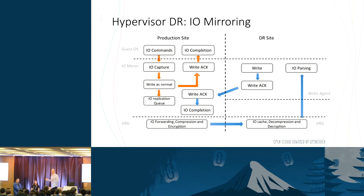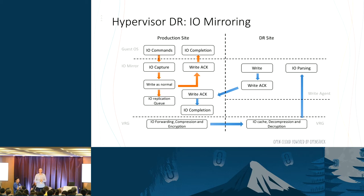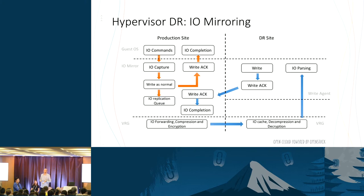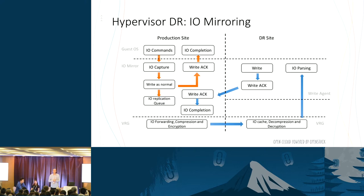Going deep into the implementation: from the VM perspective, it writes to the block device with no changes. We capture the IO — we T it — write it to disk, and at the same time push it to a queue. Once pushed to the queue, the VRG takes it. If configured to compress, it compresses; if configured to encrypt, it encrypts, then sends it to the other side. The other side writes it via the write agent, and we have an orchestration flow to write it to the correct volume on the recovery side.